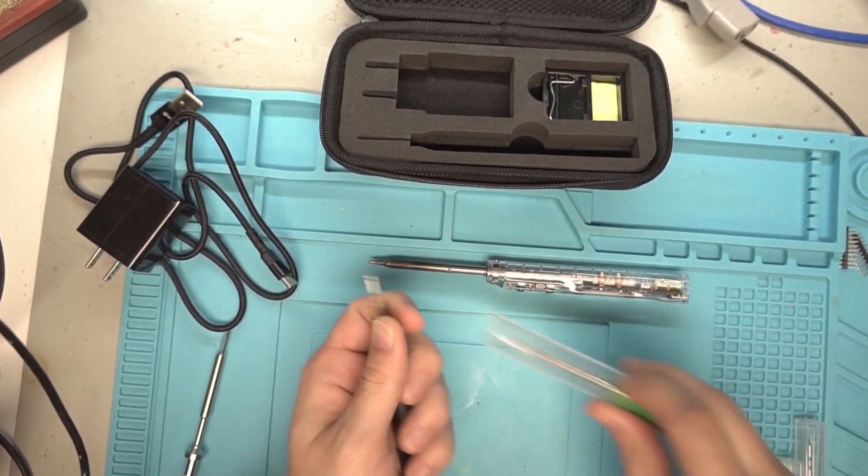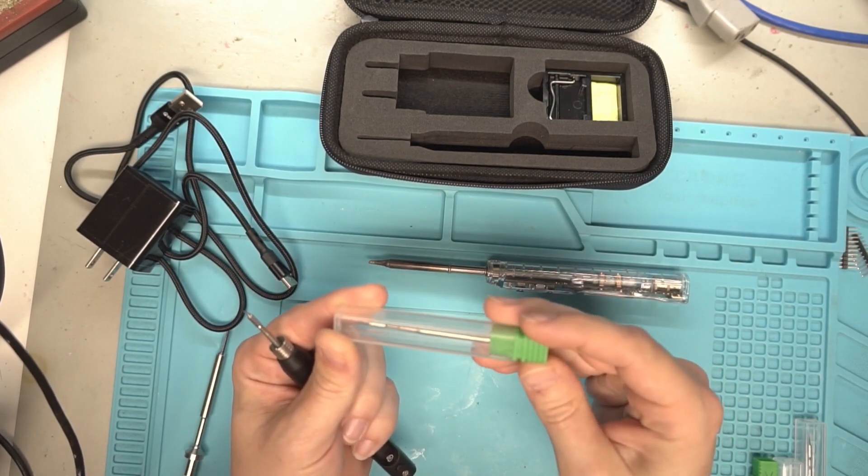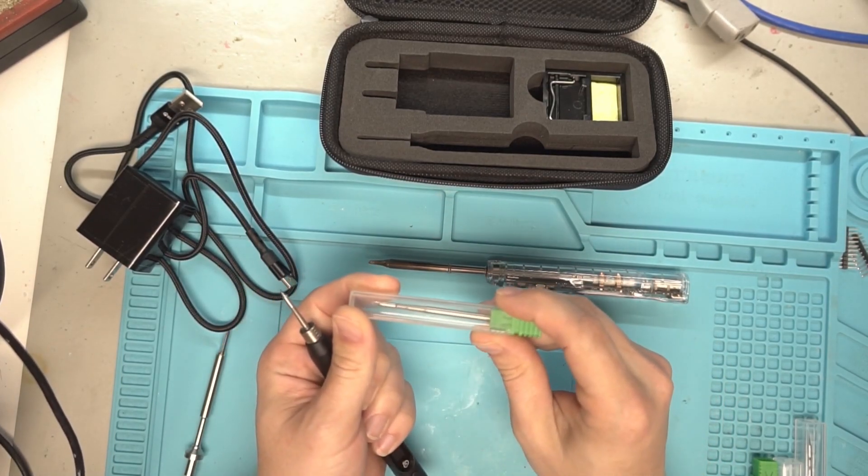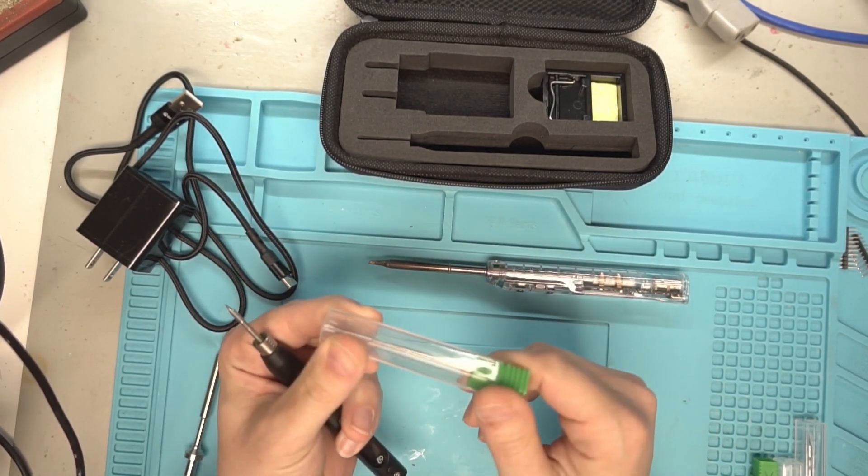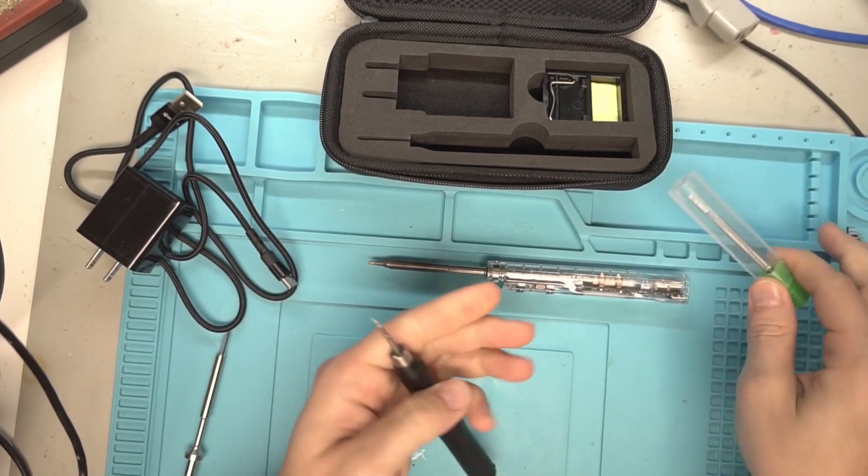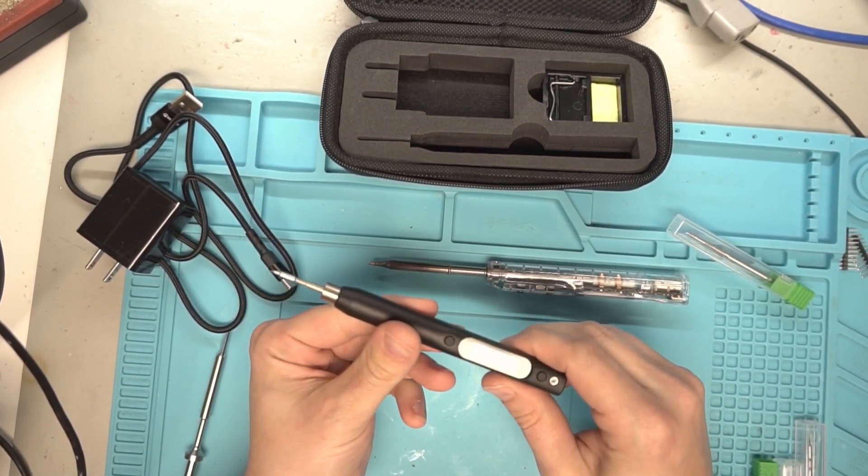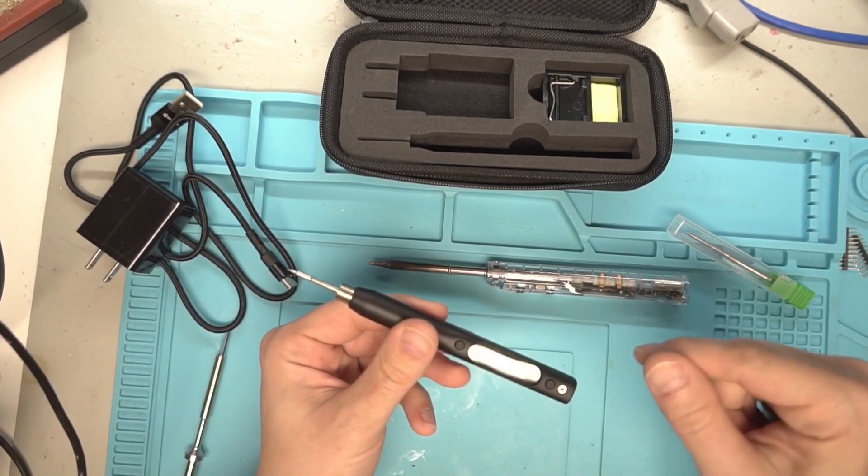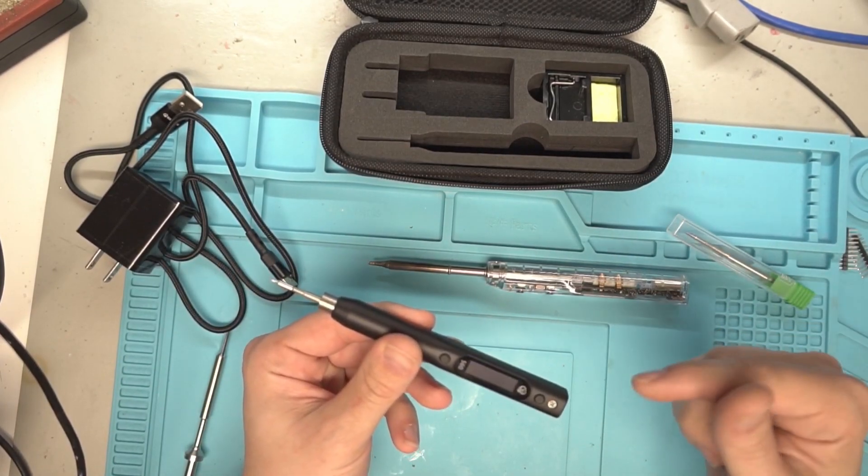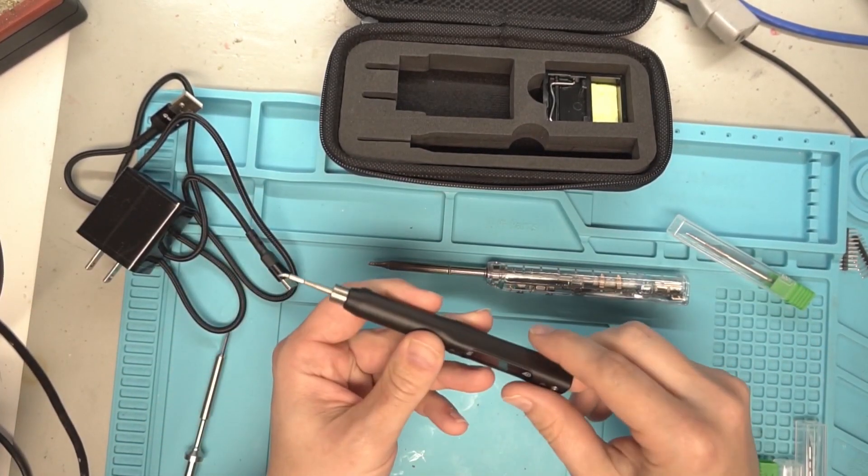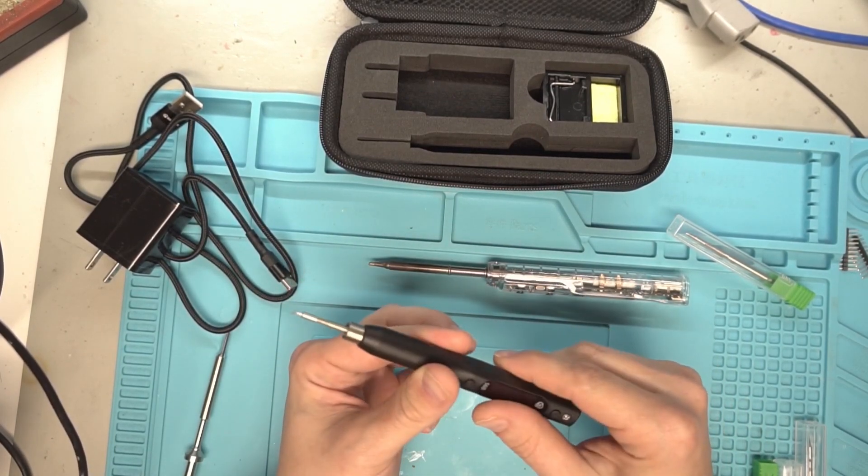I mean the tips that they send with them, they're not branded. They don't have the JBC writing on it so clearly they're a clone tip that will work with it but I do want to check and see will a genuine tip work in here and will one of these tips work in a genuine JBC piece of equipment.